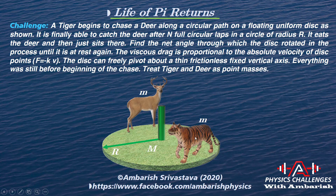Initially the tiger is still, the deer is still, and the disc is still. The tiger begins to chase the deer and the deer runs for his life — that's why the tiger is not able to catch the deer in a single lap. It is able to catch after n full circular laps. We have to find through what angle the disc rotates on the whole.